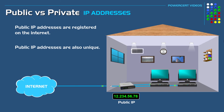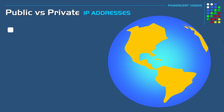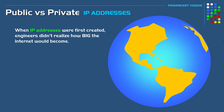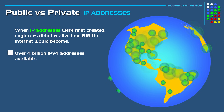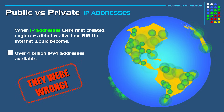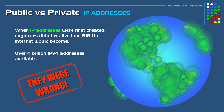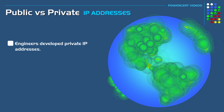Public IP addresses are also unique — there are no duplicates anywhere in the world. Now when IP addresses were created, engineers didn't realize how big the internet would become. Because even though there are over 4 billion IP version 4 addresses available, the engineers thought that would be enough. But they were obviously wrong because of the explosive growth of the internet. So in order to prevent a shortage of public IP version 4 addresses, engineers developed private IP addresses.